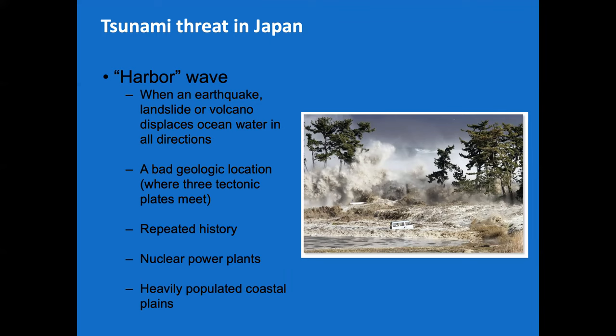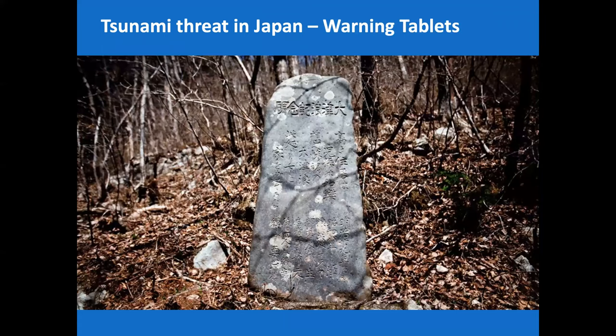Tsunami is a Japanese term for harbor wave, often the result of the ocean floor suddenly moving upward, displacing the entire water above it. This is an interesting historical warning tablet marking the highest point a tsunami was recorded reaching — almost like a warning sign saying if you're below this point, you could experience a tsunami. Such markers are available in many parts of coastal Japan.